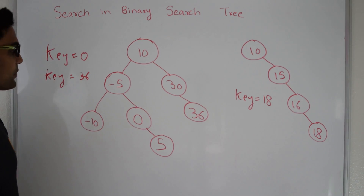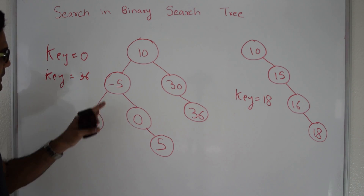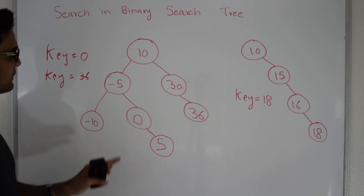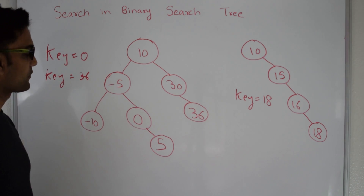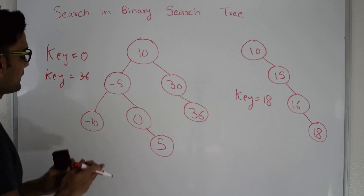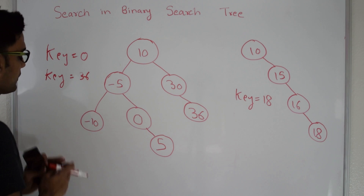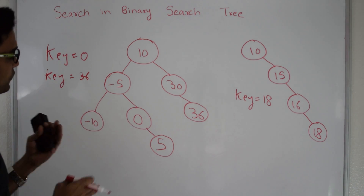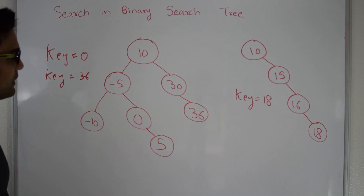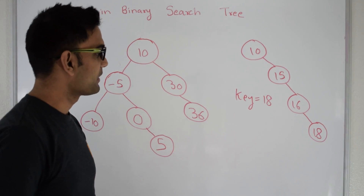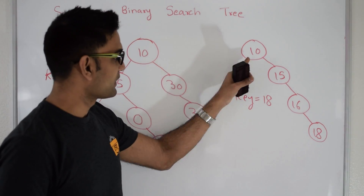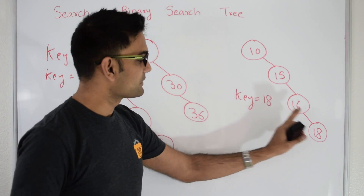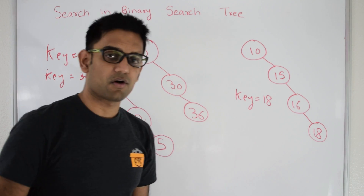This is an example of a binary search tree. Here 10 is greater than everything on its left side and less than everything on its right side. Again, minus 5 is greater than everything on its left side and less than everything on its right side, and this is true for every node. This is also an example of a binary search tree where 10 is less than everything on its right side, 15 is less than everything on its right side, and so on.